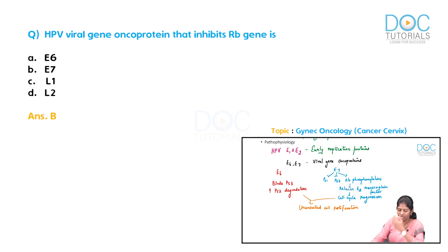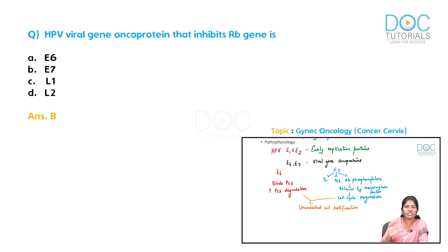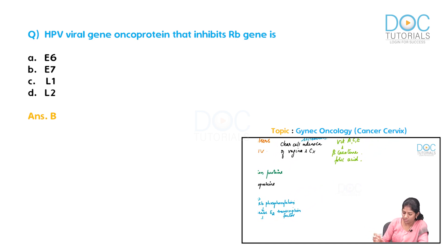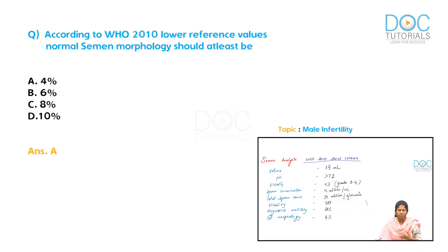Apart from these, we also have L1 and L2 capsid proteins. These are important because the vaccine we have against HPV is directed against the L1 protein — it contains the L1 capsid protein. Now, we've seen various semen parameters: volume, pH, viscosity, sperm concentration, total sperm count, vitality, progressive motility, morphology, round cells, and leukocytes.